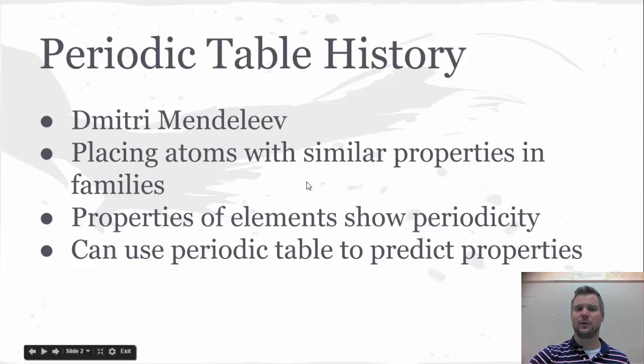Now, these properties show something called periodicity. If we arrange these atoms by increasing atomic number, every so often you're going to find an atom that's super reactive with water. And that might be the alkali metals. So then if you start to stack these alkali metals on top of each other, that's how we start to get this periodic table.